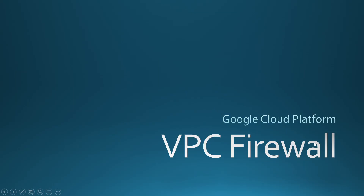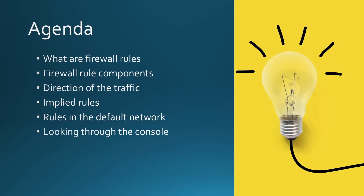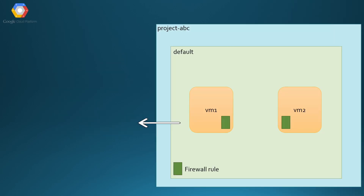Hey, what's up guys, this is GK. In this video we're going to learn about GCP's VPC firewall rules. By the end of this video you will learn firewall rules, the firewall rule components, the direction of traffic, implied rules, and some default rules that you would see in a default network. We'll also go to the console, and as always you will find timestamps in the description.